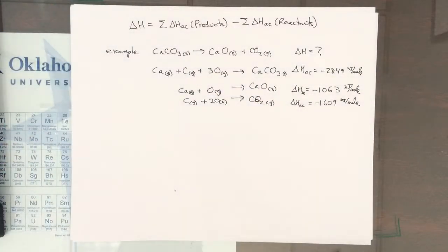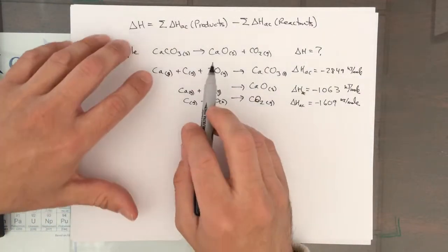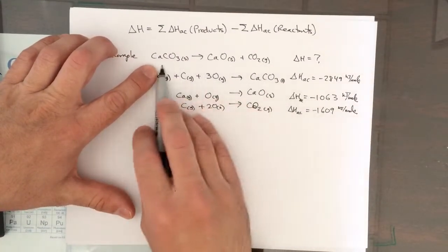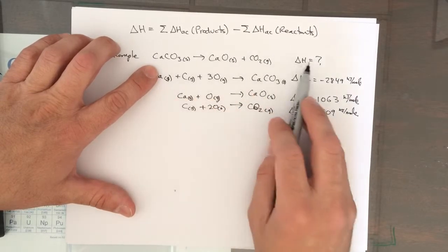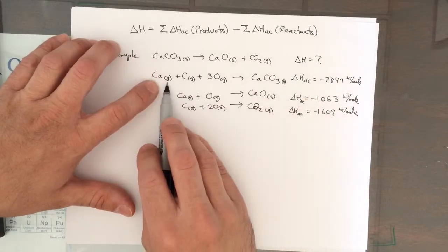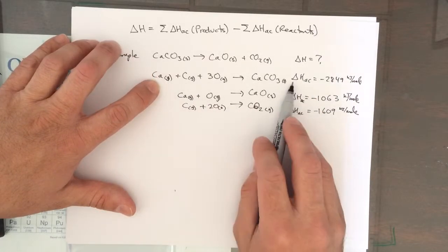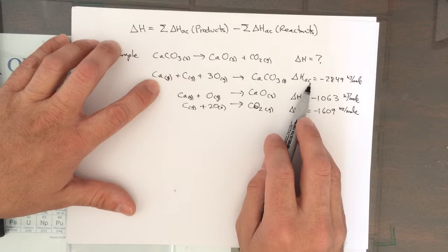Let's do an example where we're looking at the delta H of this reaction. This is calcium carbonate decomposing. We've talked about this in lab a couple of times. I've written out the delta HACs. Remember AC stands for atom combination.